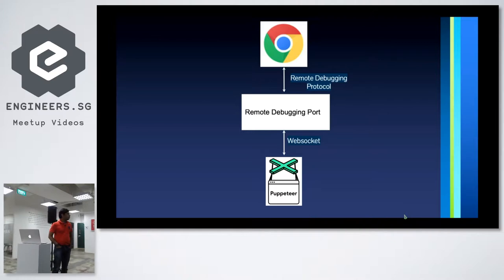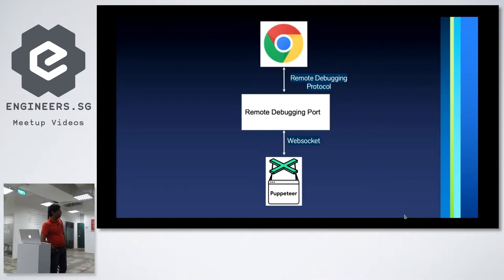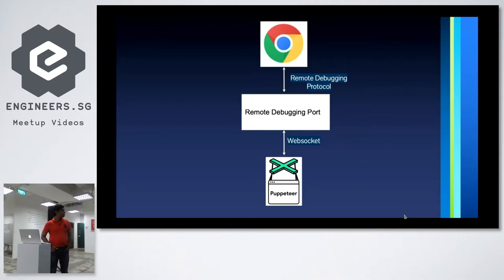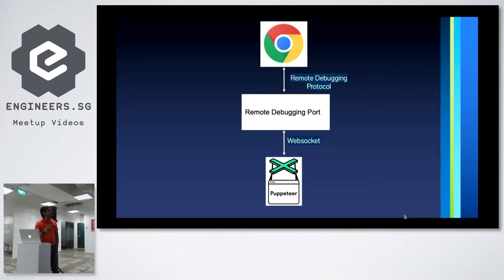Puppeteer is an npm module you can install from Node Package Manager. It internally talks to Chrome using a remote debugging port and sends WebSocket messages — these are asynchronous messages and Chrome sends back responses asynchronously. For launching a browser, opening a URL, finding an element, and interacting — all those things are controlled by WebSocket messages, which is an asynchronous protocol compared to JSON wire protocol. You can also subscribe to events and keep getting responses to build your understanding of the browser state.